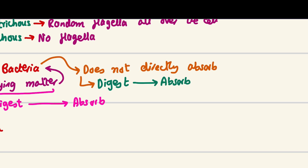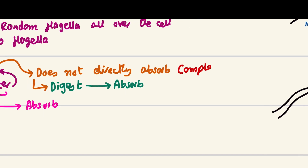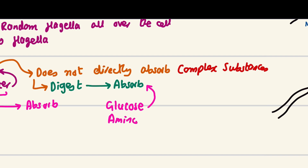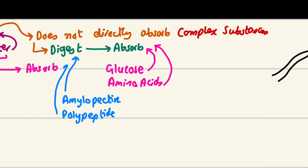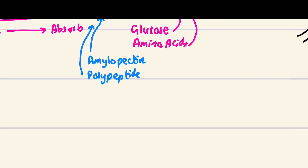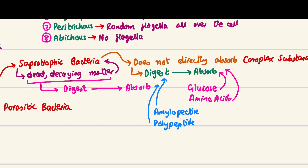The bacteria do not directly absorb complex substances. If glucose or amino acids are already available, they can be absorbed directly. But complex molecules like amylopectin or polypeptides must first be digested before absorption — similar to how digestion works in humans.